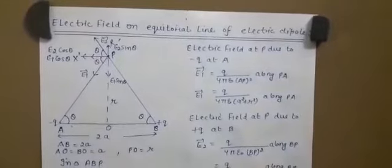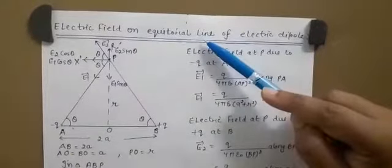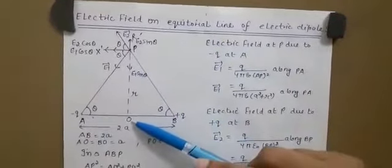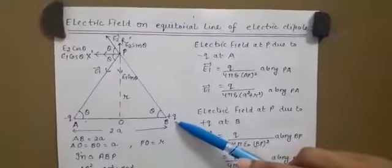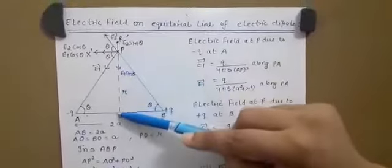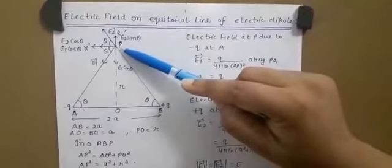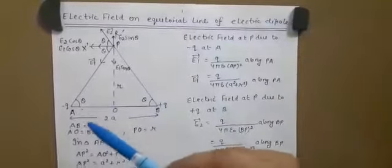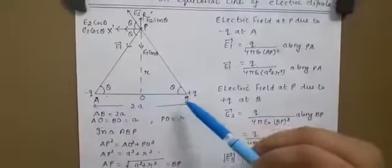Next, we find the electric field on the equatorial line of an electric dipole. The equatorial line is a line that is perpendicular to the axial line and passes through the center of the axial line. So if A and B are the positions of minus q and plus q charges forming the electric dipole, and O is the midpoint, the equatorial line passes through O perpendicular to AB.